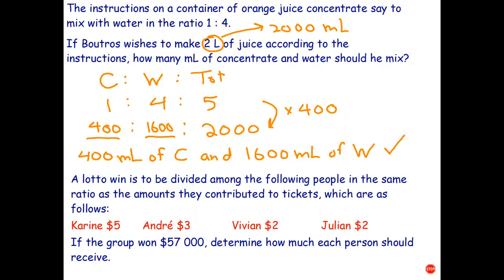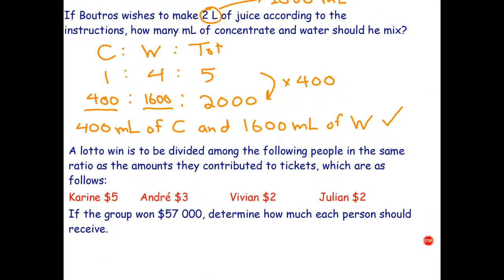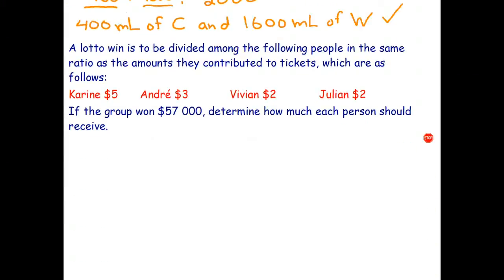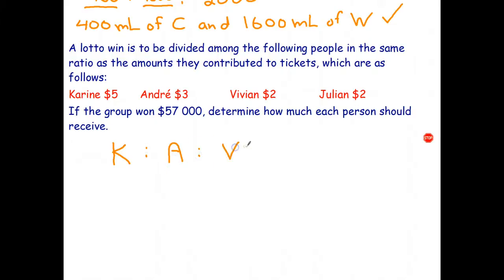Okay, a lot of lottery winnings to be divided amongst the following people in the same ratio as the amounts they contributed to tickets. So if they didn't put in an equal amount to buy the ticket, then they should divide the winnings in the same ratio — this one does make sense.